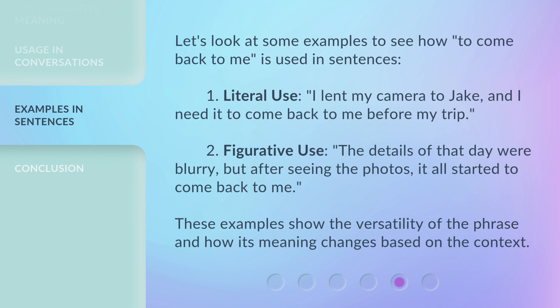Let's look at some examples to see how 'to come back to me' is used in sentences. One, literal use: 'I lent my camera to Jake, and I needed it to come back to me before my trip.' Two, figurative use: 'The details of that day were blurry, but after seeing the photos, it all started to come back to me.' These examples show the versatility of the phrase and how its meaning changes based on the context.